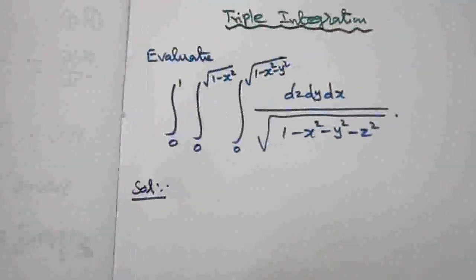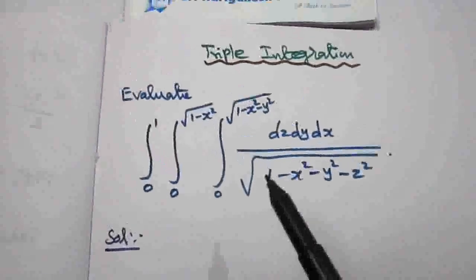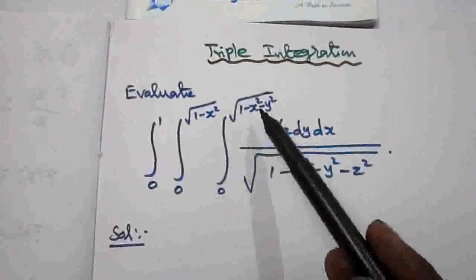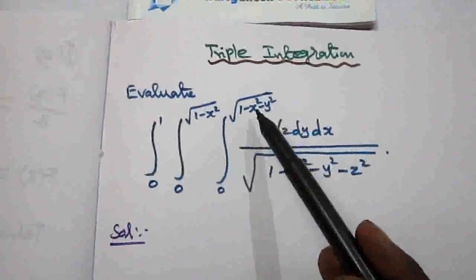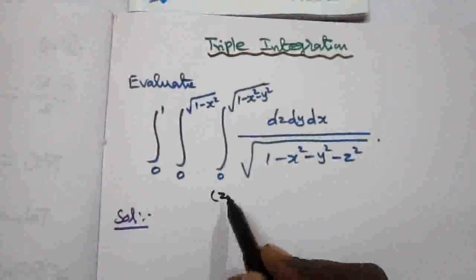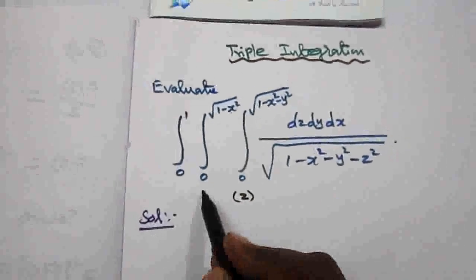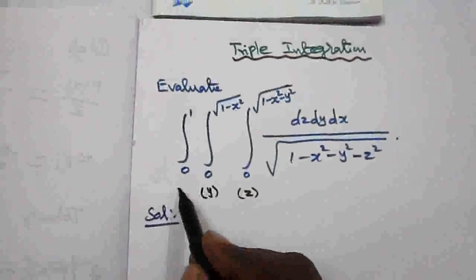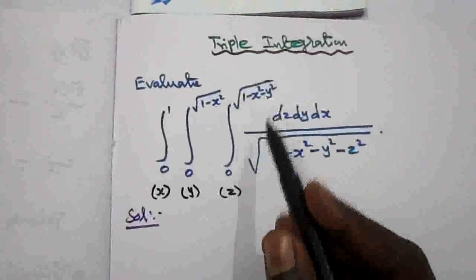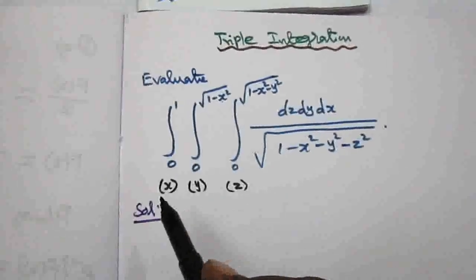We have to evaluate this integral. First, we identify the integration order. The inner integral limit has the most variables — it involves both x and y — so that is the limit for z. The next limit involves only x, so that is the limit for y. Obviously, the remaining limit is for x. So z is the first integral, next with respect to y, then with respect to x.